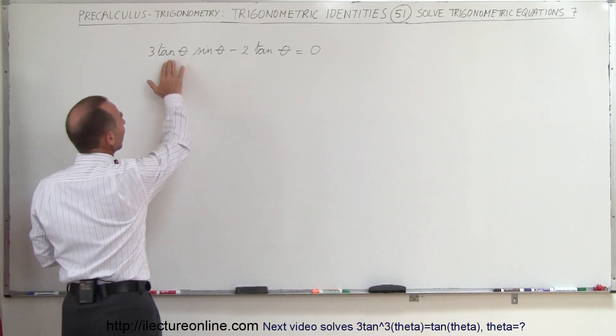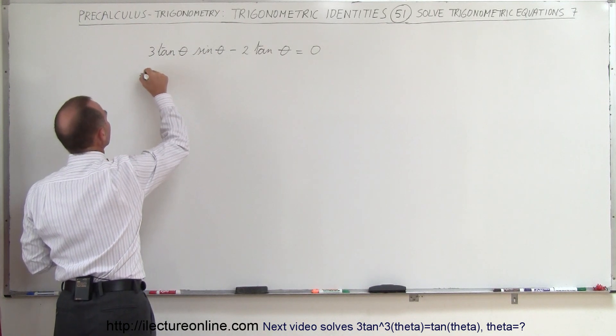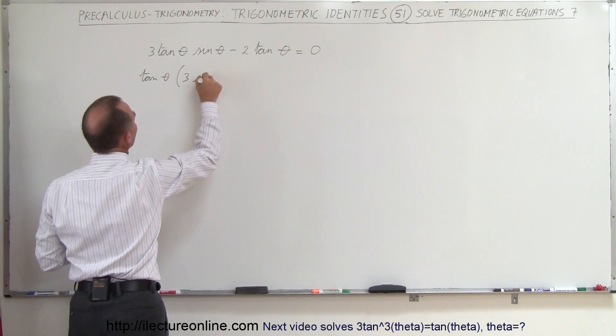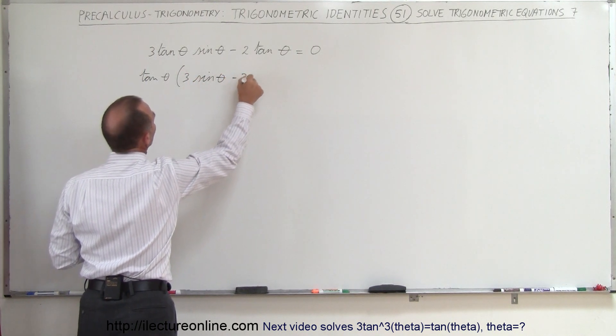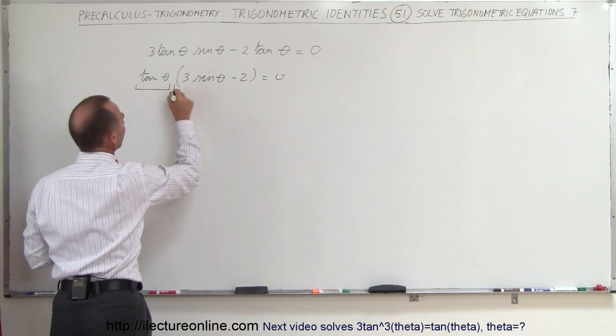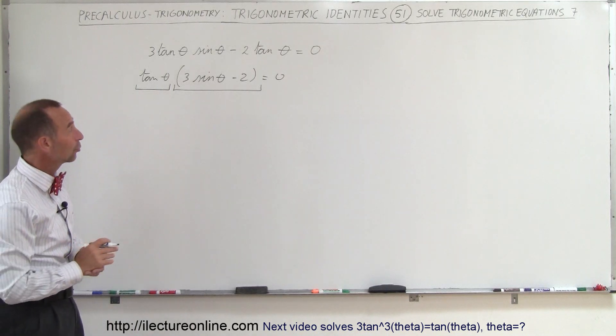Here we can see that we can factor out the tangent of theta. So the tangent of theta is removed and now we have left over three times the sine of theta minus two equals zero. Now we can see that we have a product of the tangent of theta multiplied times what's inside the parentheses, three times the sine of theta minus two.